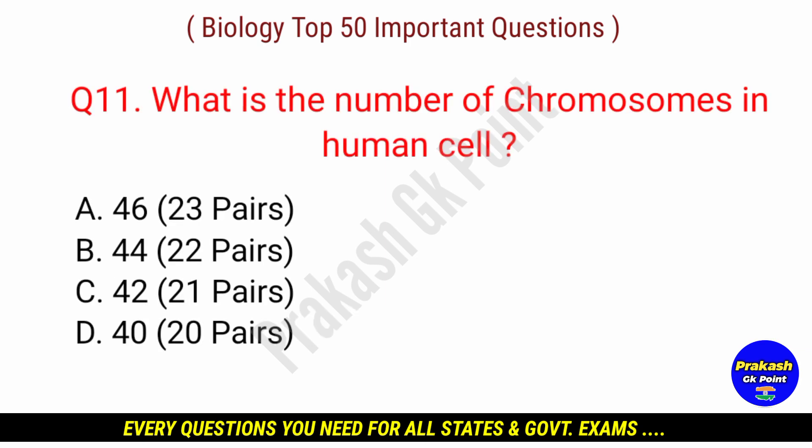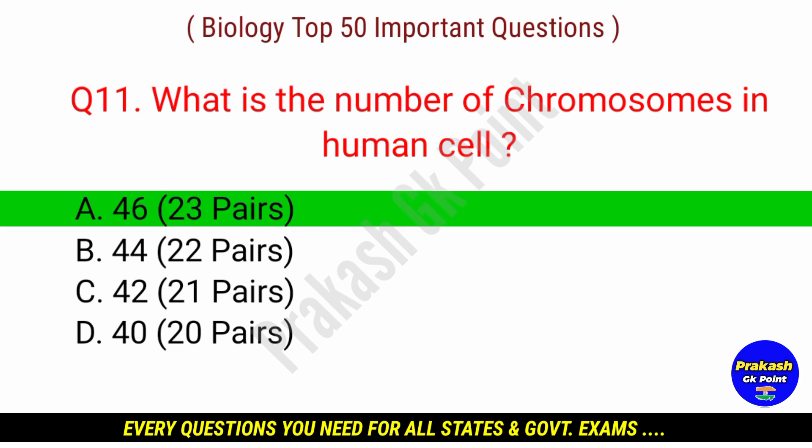Next question: what is the number of chromosomes in human cells? Answer: option A — 46.